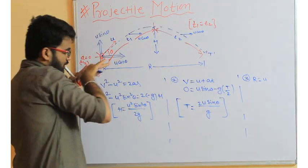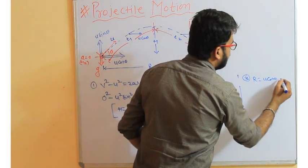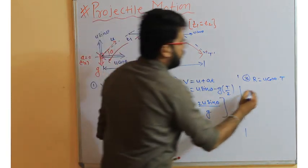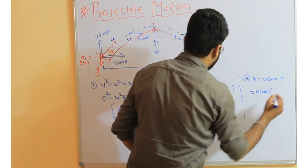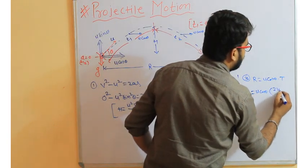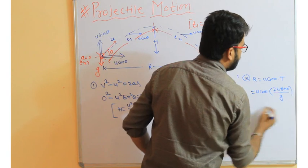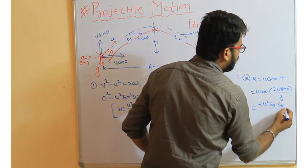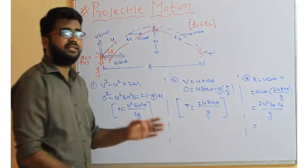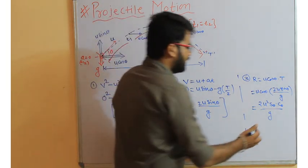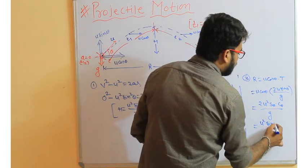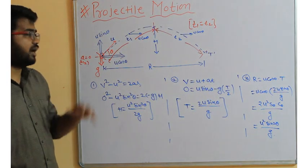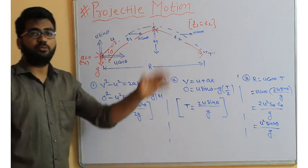So the range formula is R = u cosθ × total time = u cosθ × (2u sinθ / g), which gives R = 2u² sinθ cosθ / g. Using the identity 2 sinθ cosθ = sin2θ, we get R = u² sin2θ / g. These are the three formulas you need to remember for projectile motion.